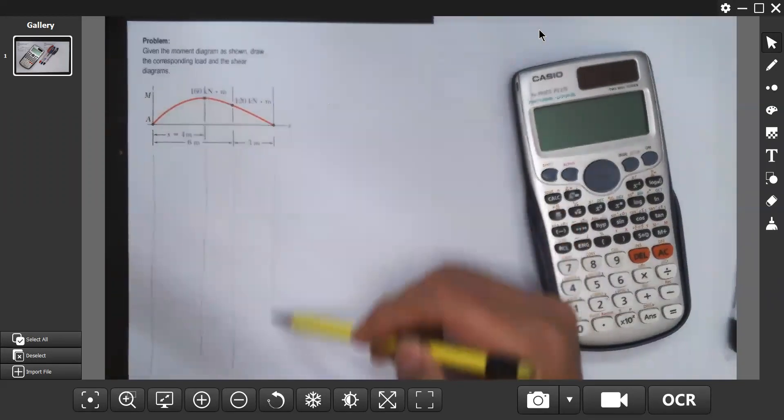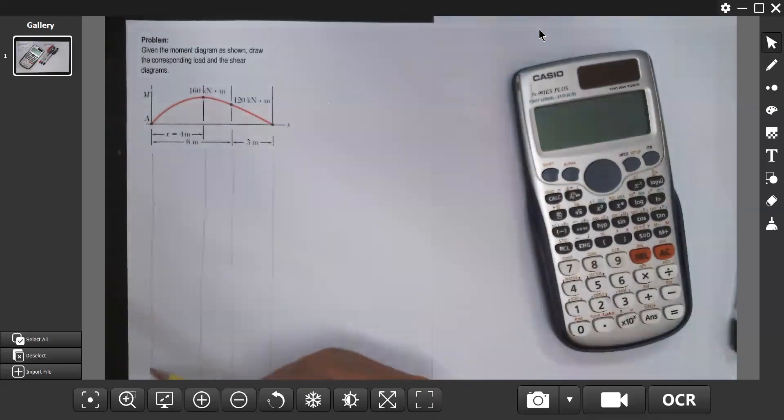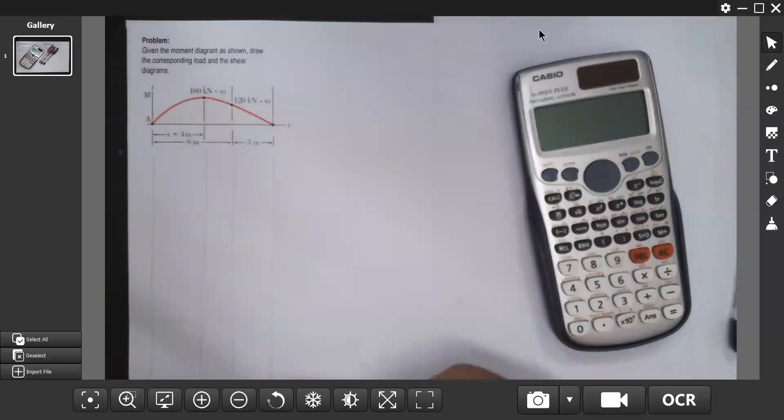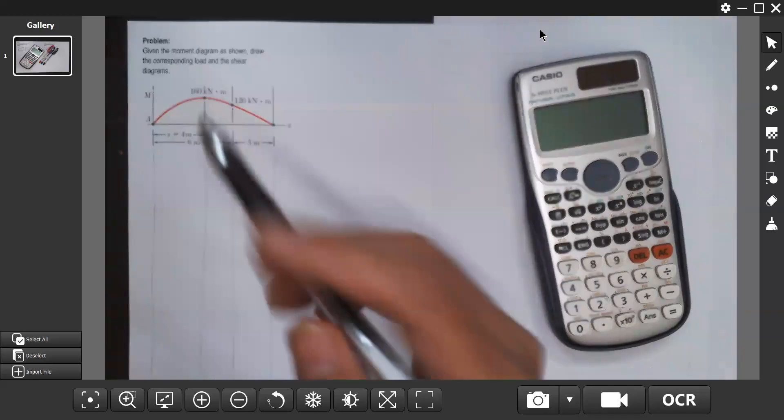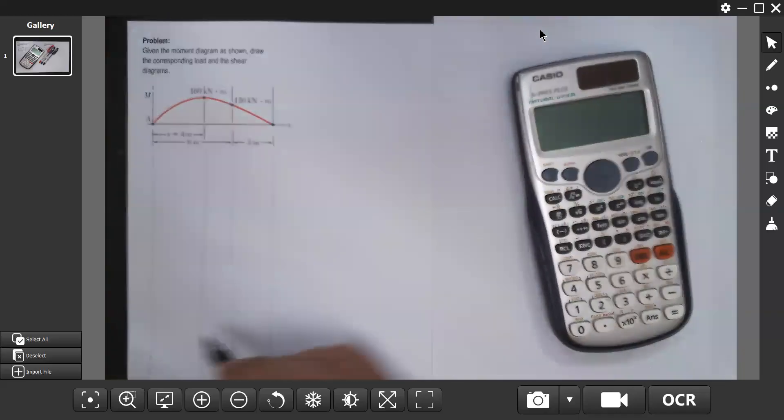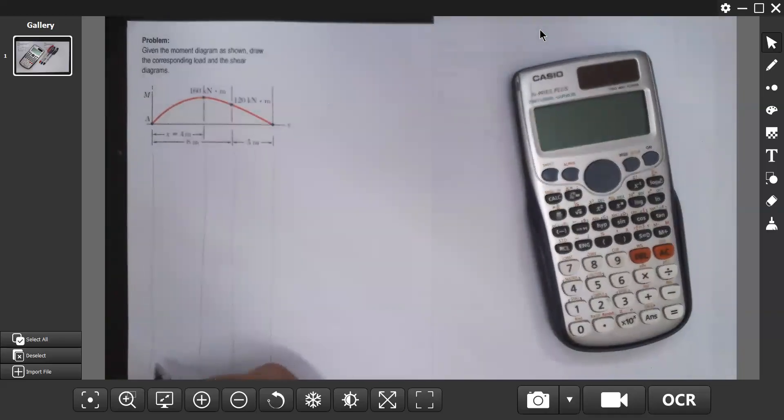This requires background on area method to be able to understand how to draw and understand the values from moment diagram. Let us first draw the moment diagram here.